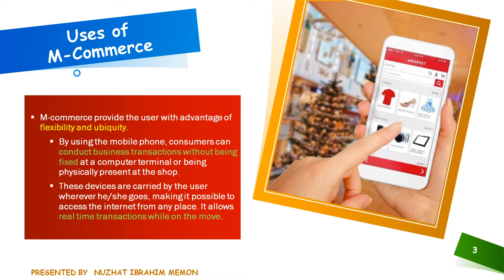M-commerce provides the user with the advantage of flexibility and ubiquity. Ubiquity is often used when talking about M-commerce — simply, it means a mobile device that is connected to the internet and allows the user to get any information from anywhere. Flexibility is possible in M-commerce because by using a mobile phone, the consumer can conduct business transactions without being fixed at a computer terminal or being physically present at a shop. Ubiquity is possible because these devices are carried by the user wherever they go, making it possible to access the internet from any place and allowing real-time transactions while on the move.